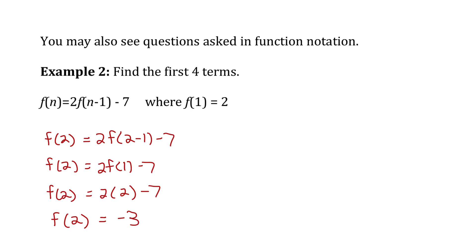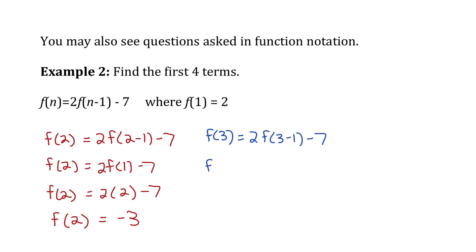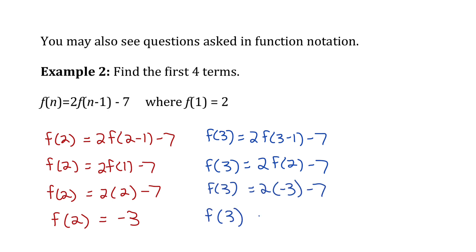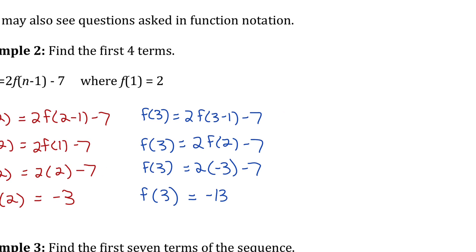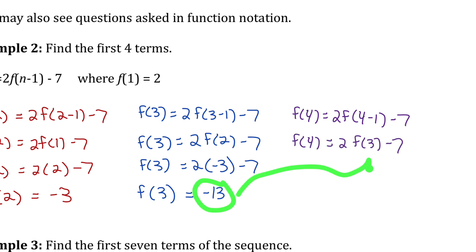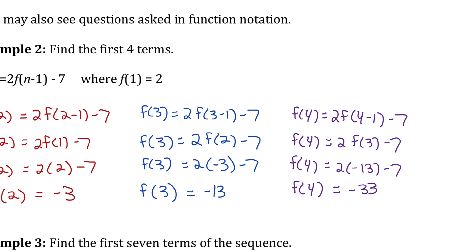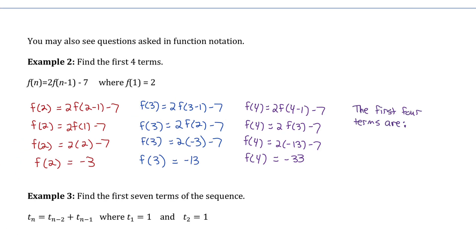Negative 3 is the value of the second term in the sequence. Now I'll find term 3 by replacing n with 3. Simplifying, f(3) equals 2 times f(2) minus 7. f(2) is negative 3, so f(3) equals negative 13. Lastly, f(4): subbing in 4 for n, simplifying 4-1 to 3, and replacing f(3) with negative 13 gives f(4) equal to negative 33. So the first four terms of this sequence are 2, negative 3, negative 13, and negative 33.